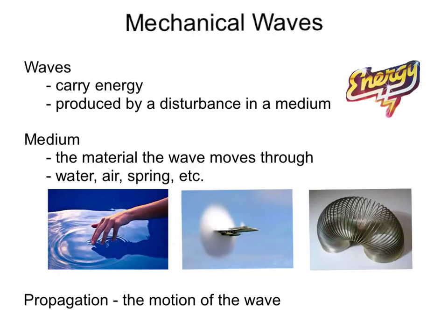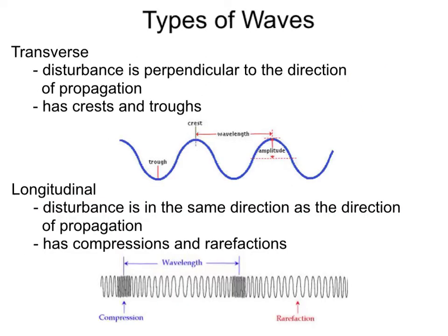Now, as we talk about waves moving, we say waves propagate, or there's a propagation. That's just a fancy word for the motion of the wave. There are two basic types of waves, the first type being transverse. Transverse is where the disturbance creating the wave is perpendicular to the direction of propagation — meaning we disturb this slinky this way, and the waves move in this direction.